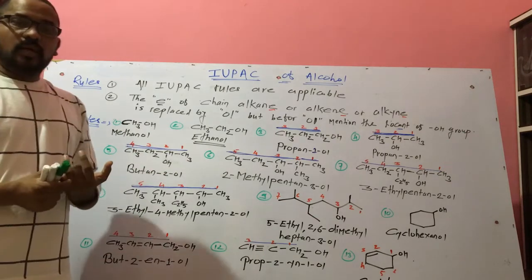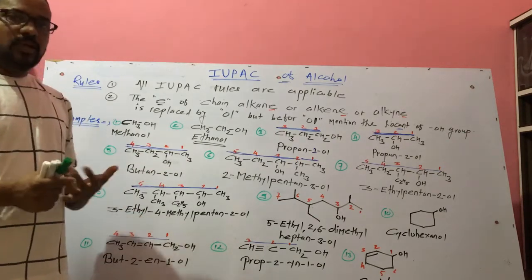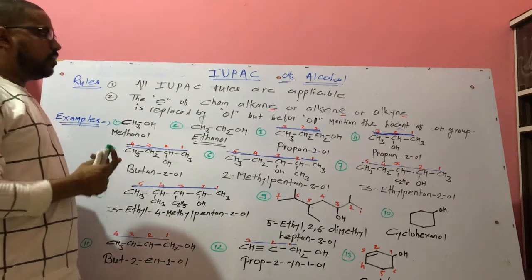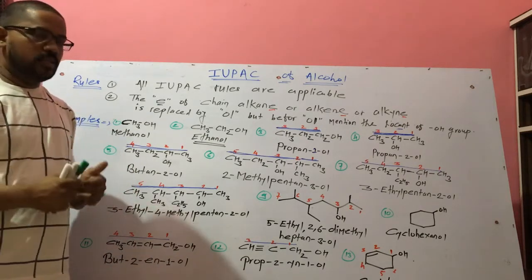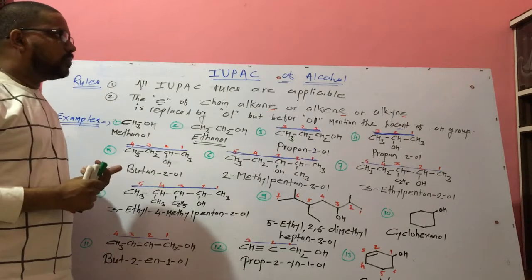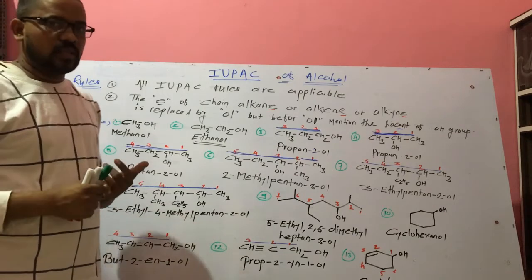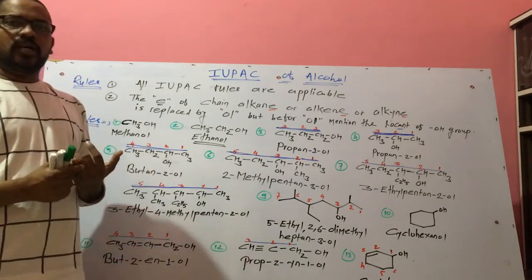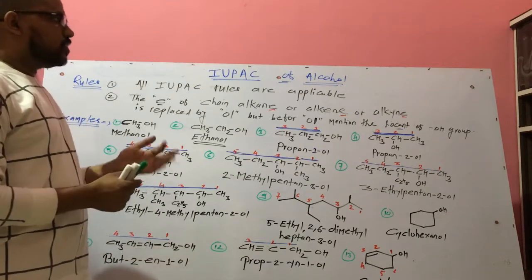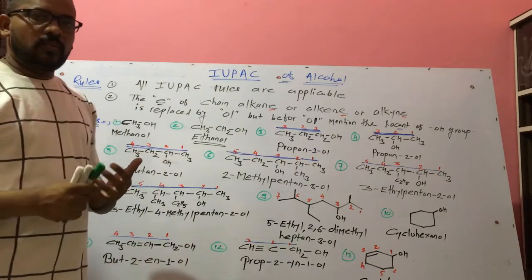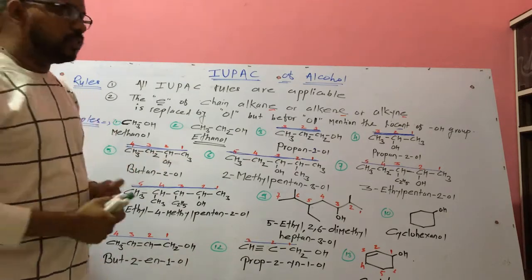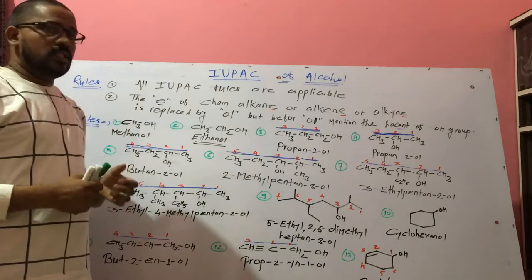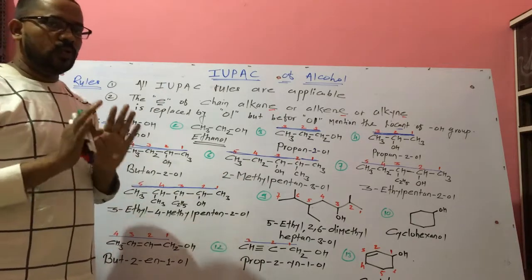If the compound contains the same branches, use prefixes di, tri, or tetra. The next rule is that if the compound contains different branches, we first write down the name of the branch which comes alphabetically first. Keep in mind these are the rules of the IUPAC system.